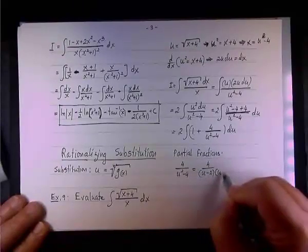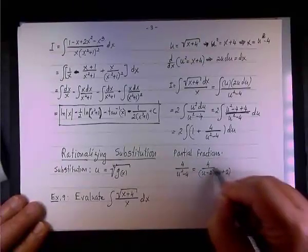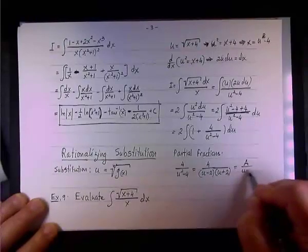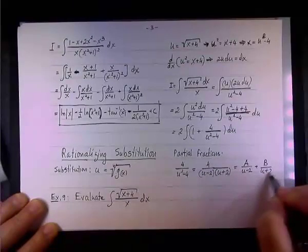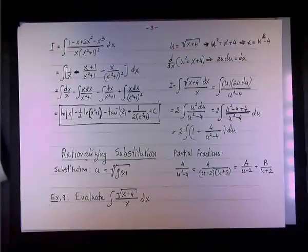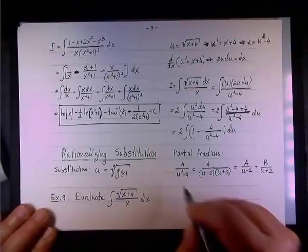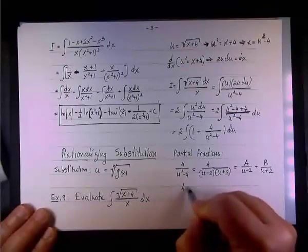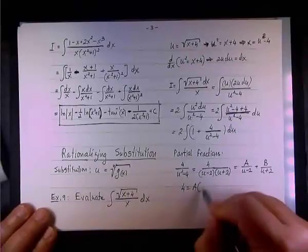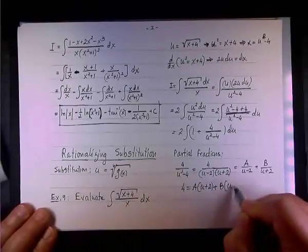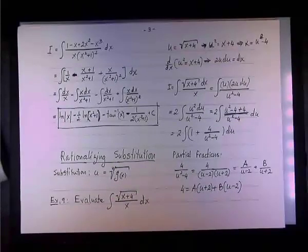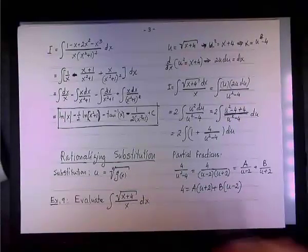In 4 over u squared minus 4, I can factor it first as u minus 2 times u plus 2 and write it as a sum of a over u minus 2 plus b over u plus 2. Compare the coefficients, multiply both sides by the LCD and you get 4 equals a times u plus 2 plus b times u minus 2.